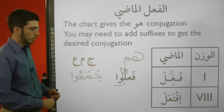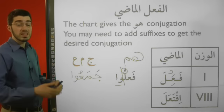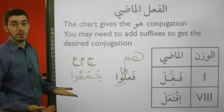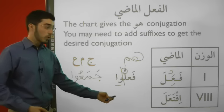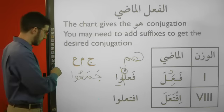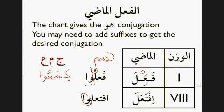What about form eight? What if I want to say ifta'ala — meaning something like to be gathered — and I want to make it for hum, i.e. they were gathered? Well, same process: I think about what I added. I add the same suffix to form eight, so I say ifta'alu. Then I substitute into this paradigm: the fa is the jim, the ayn is the meem, and the lam is the ayn. I vowel accordingly — kasra, sukun, fatha, fatha, dhamma — ijtama'u, meaning they were gathered.